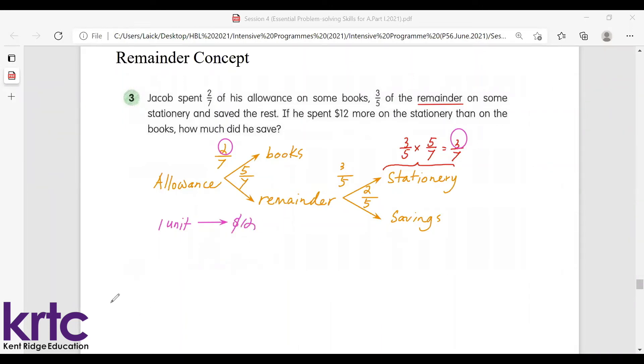The question asks how much did Jacob save. So we will have to find out the fraction of allowance that is saved. So I'll take two-fifths multiply by five-sevenths, that is two-sevenths.